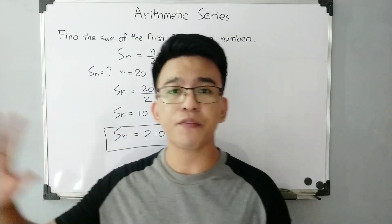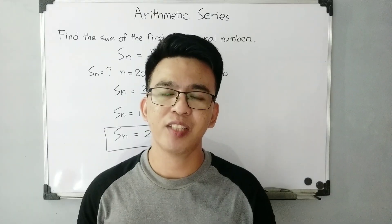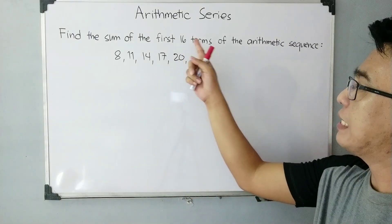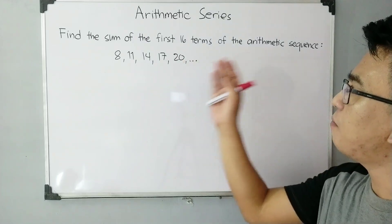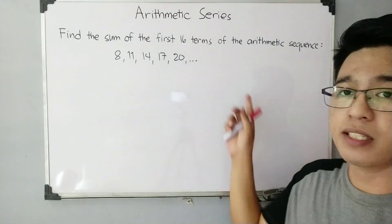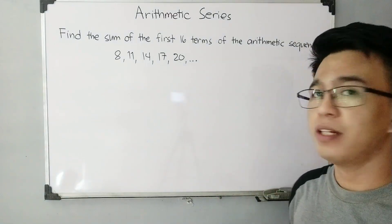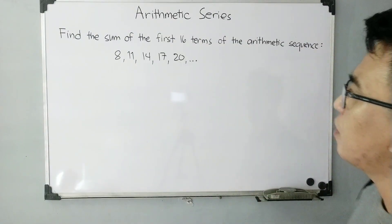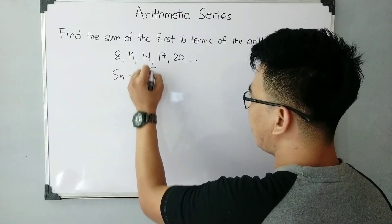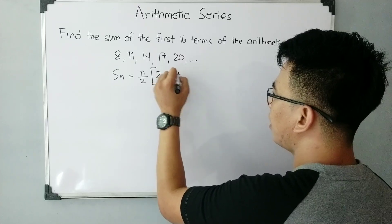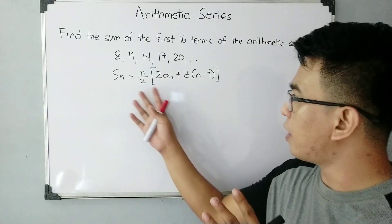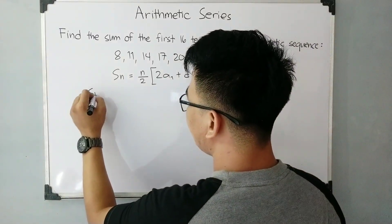In the next part of our video, I'll give an example where the first term is given but the last term is not. Stay tuned. Now let's have the second example: find the sum of the first 16 terms of the arithmetic sequence 8, 11, 14, 17, 20, and so on. Notice that the last term of the sequence is not given, so the formula we will use is S sub n = n/2 times (2·a sub 1 + d times (n minus 1)). S sub n is unknown.